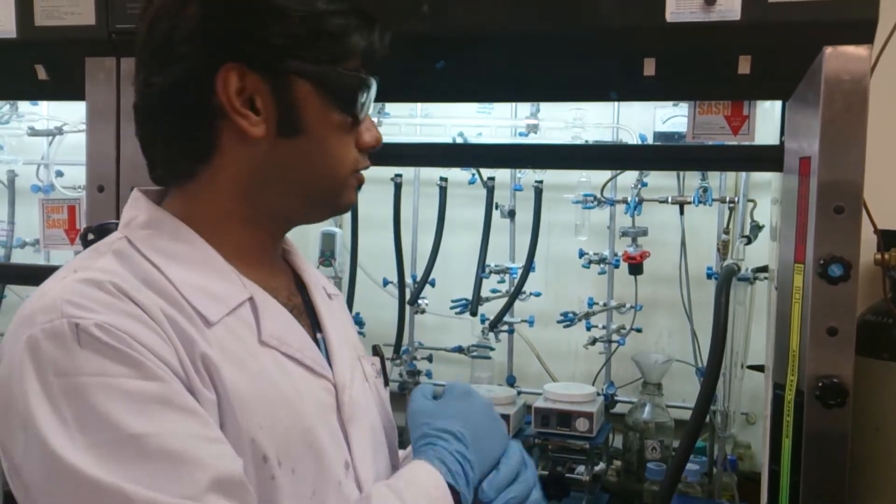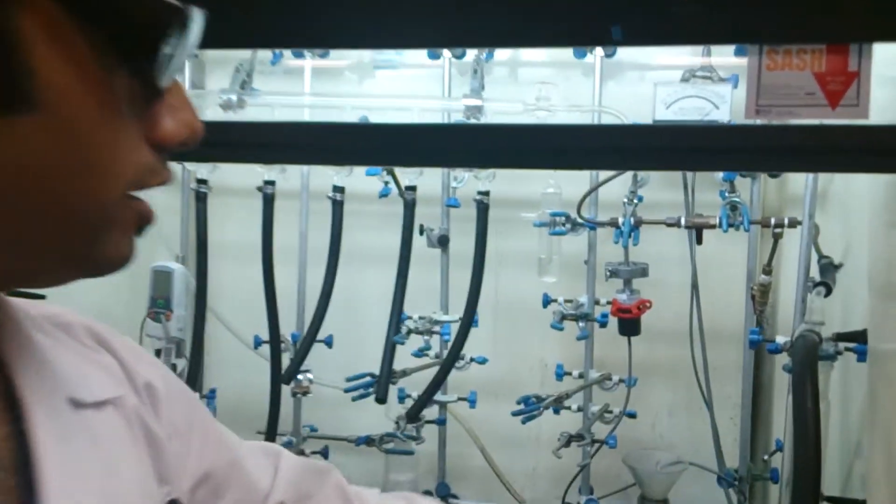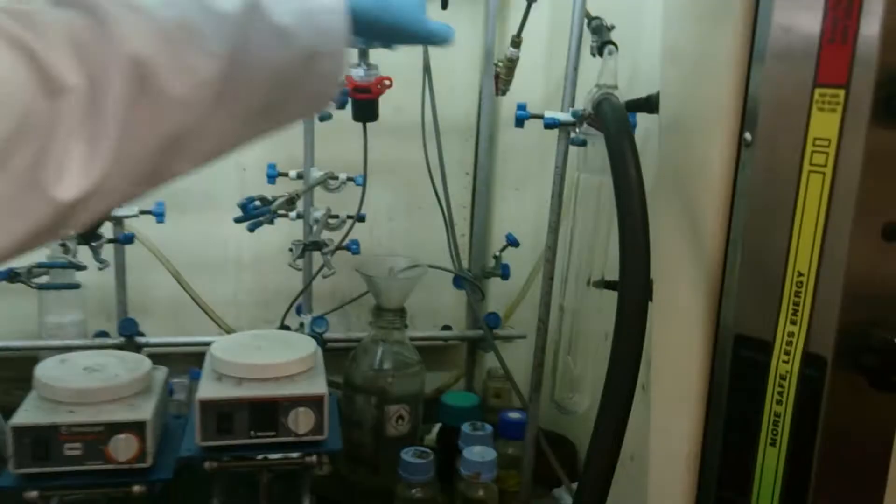So this is a typical setup of a Schlenk line and a cold trap. This is the trap which is connected via this copper tubing to the Schlenk line.